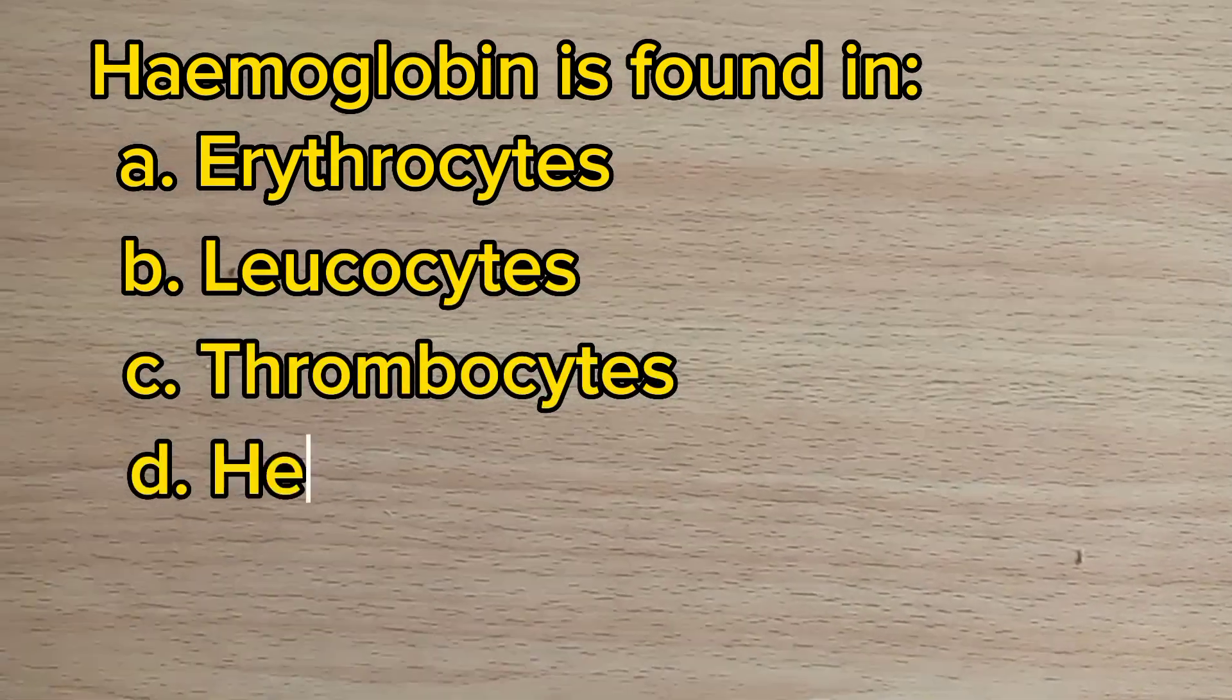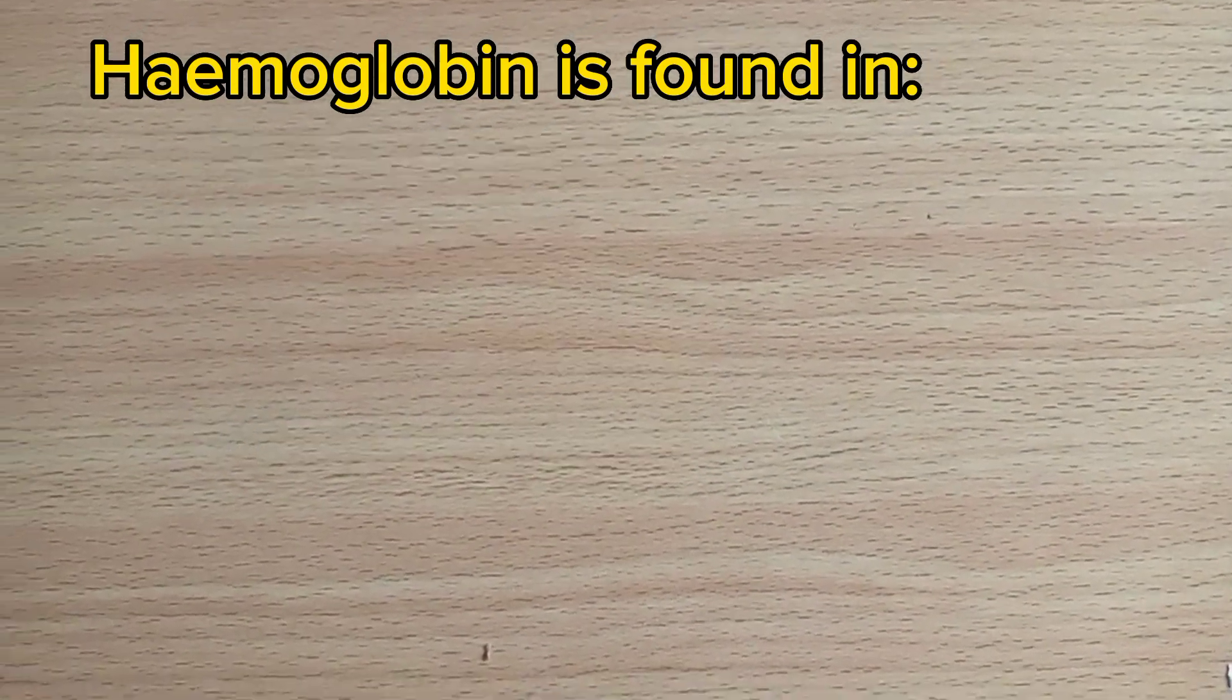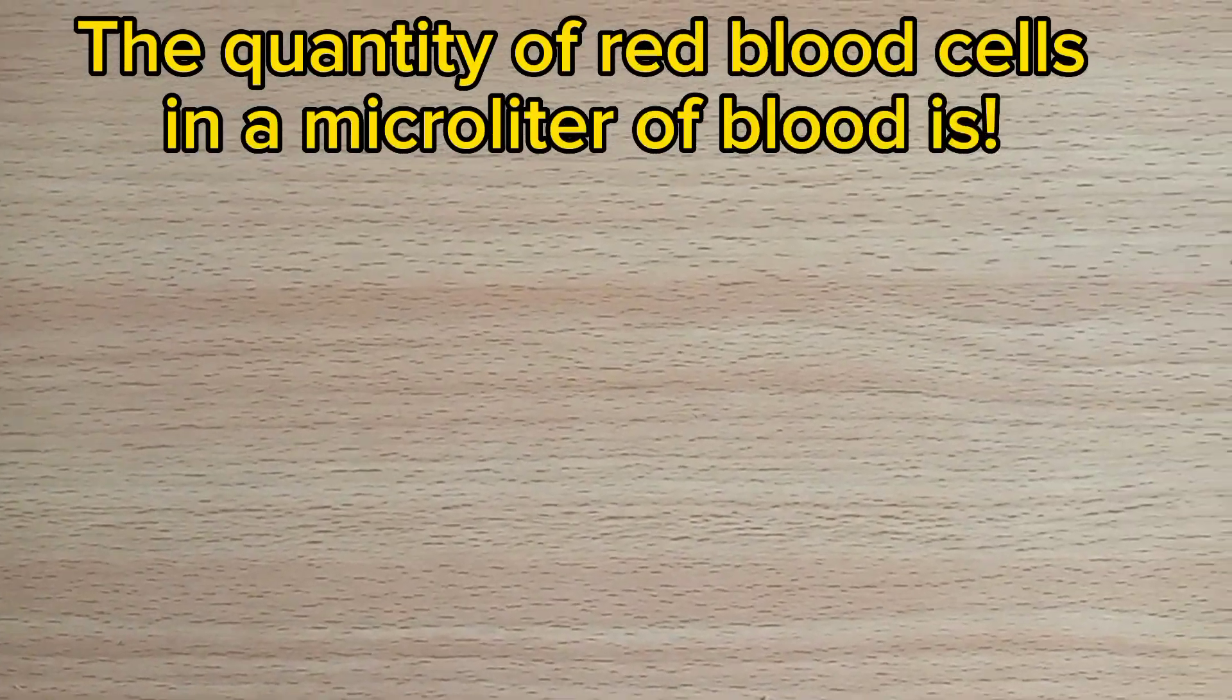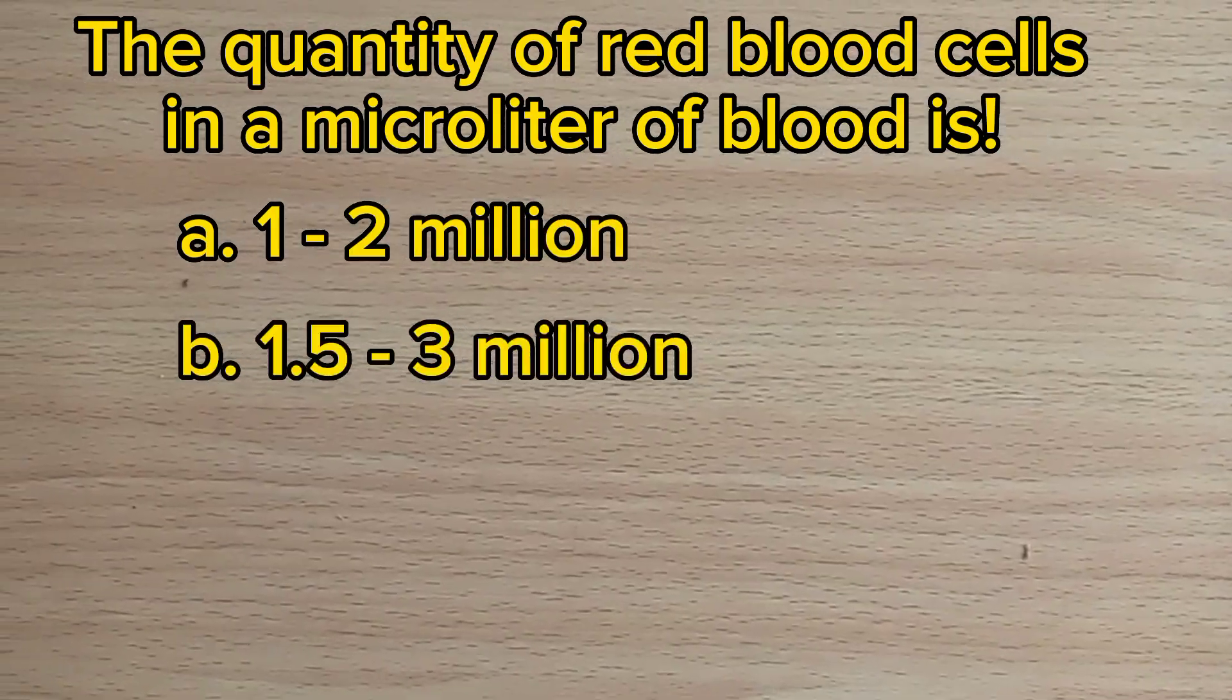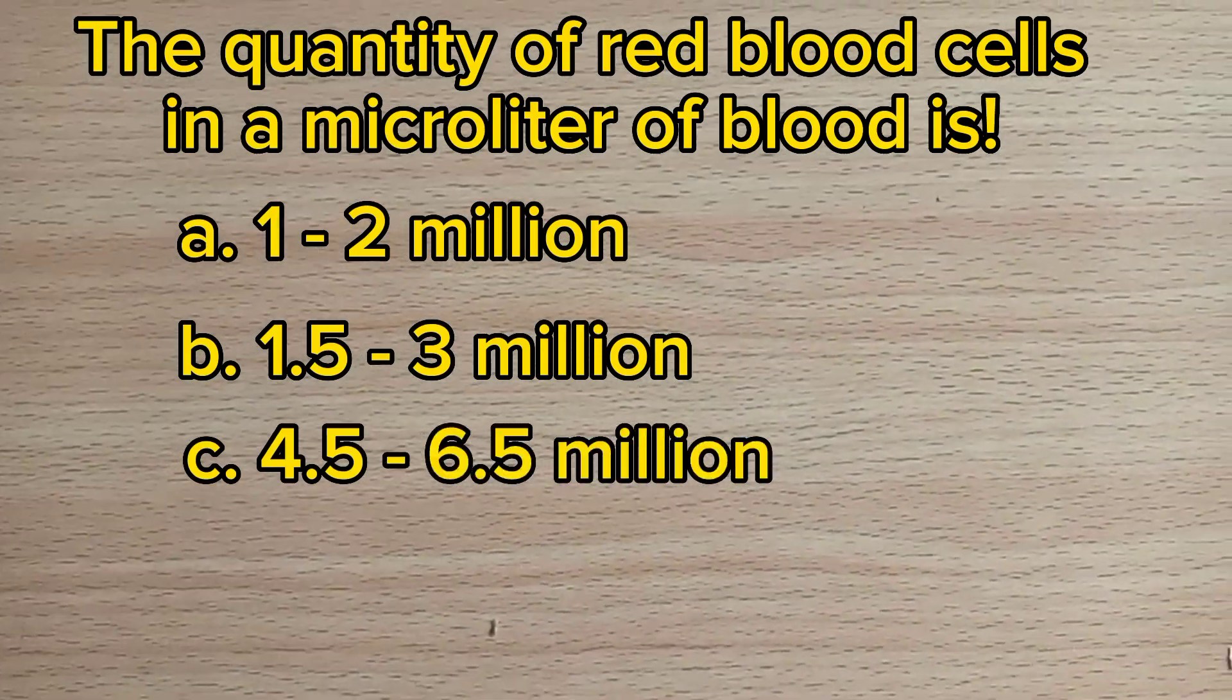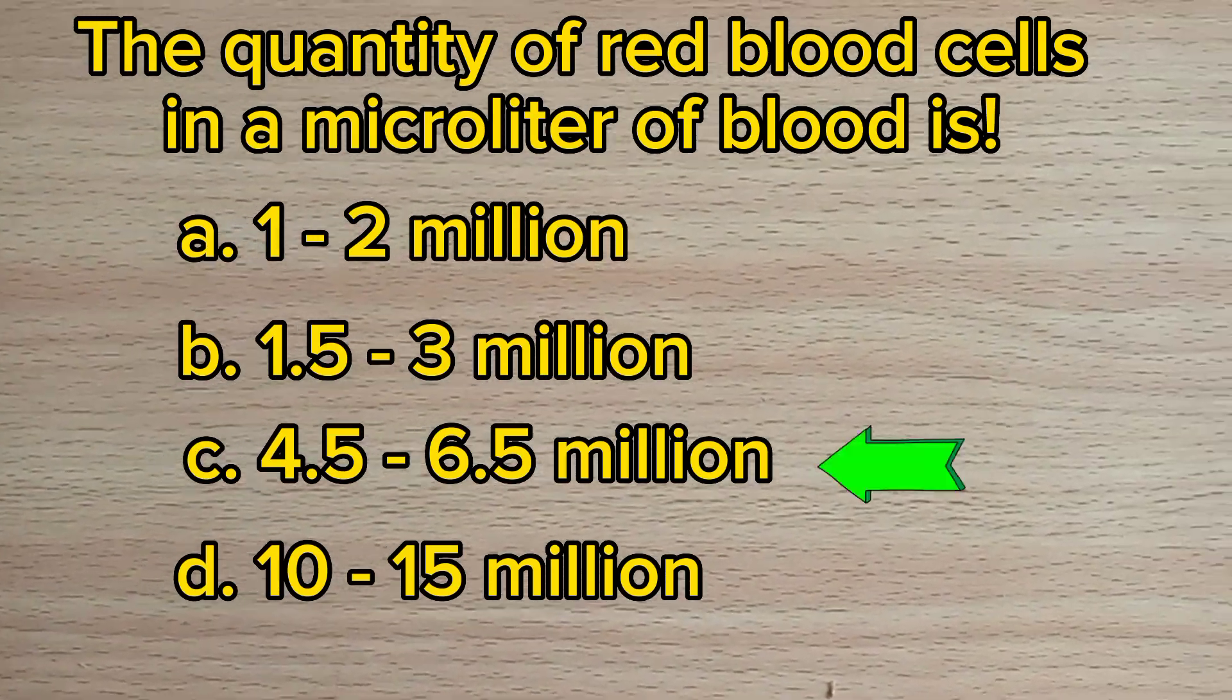Number eleven: The quantity of red blood cells in a microliter of blood is: A. 1 to 2 million, B. 1.5 to 3 million, C. 4.5 to 6.5 million, D. 10 to 15 million. The answer is C, 4.5 to 6.5 million.